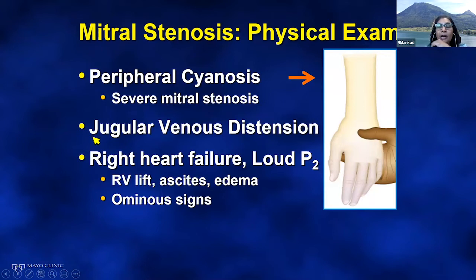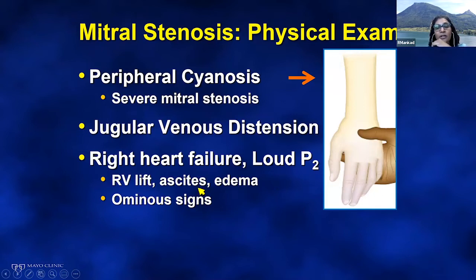Because of the pulmonary hypertension that can develop, you can see jugular venous distension, a loud second heart sound — typically the P2 component — and other evidence of right heart failure with an RV lift, ascites, and edema. Having those findings are clearly ominous signs.